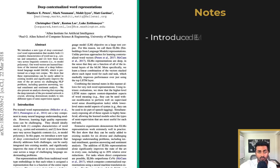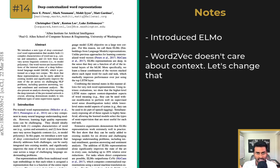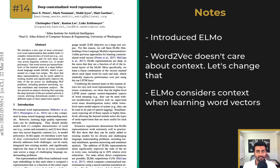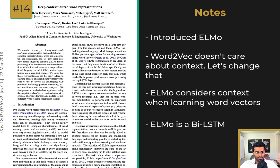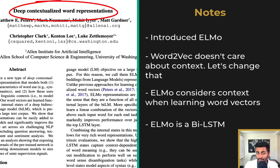Next up, we have Deep Contextualized Word Representations. The goal is to understand really high quality embeddings for words. The main issue with Word2Vec is that it doesn't care about context — the same vector is generated no matter where the word is in the sentence. But word meanings can change depending on context, and the vector doesn't reflect that. To solve this, ELMo considers context, so every word vector generated is a function of all words in the sentence. It does so using a bi-directional LSTM architecture, allowing it to understand words that come before and after a given word. The result is a deep contextualized word representation that can be fine-tuned on any NLP problem.